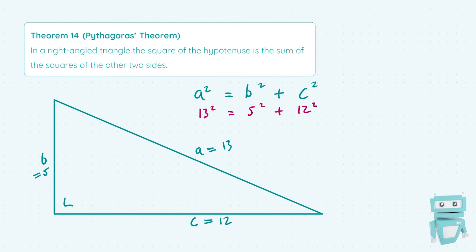So 13² = 169, which is equal to 25, which is 5², plus 144, which is 12².